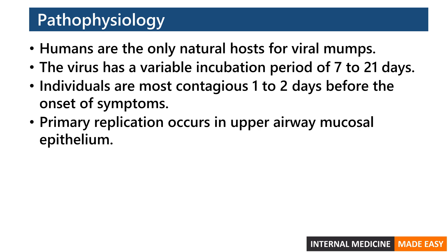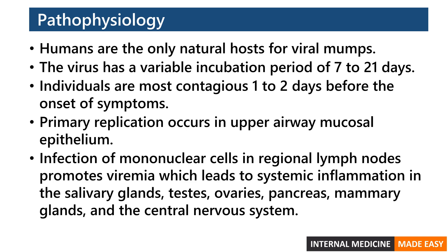The virus replicates locally in the upper respiratory tract mucosal epithelium, then quickly spreads to the local lymphoid tissue. Infection of mononuclear cells promotes viremia, whereby the virus spreads to distant sites in the body and causes systemic inflammation in the salivary glands, testes, ovaries, pancreas, mammary glands, and the central nervous system.